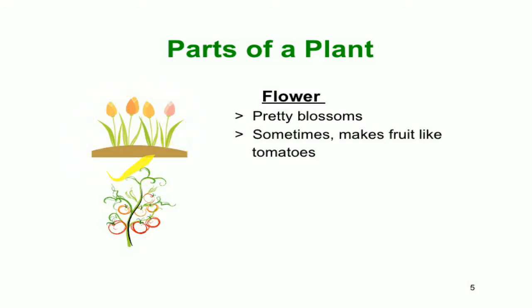Here we can see a photograph of flowers. A flower is pretty and blossoms. Sometimes flowers make fruits, like tomatoes — tomato flowers make fruit. Flowers are also important parts of plants. Children, you all understand about the parts of plants.